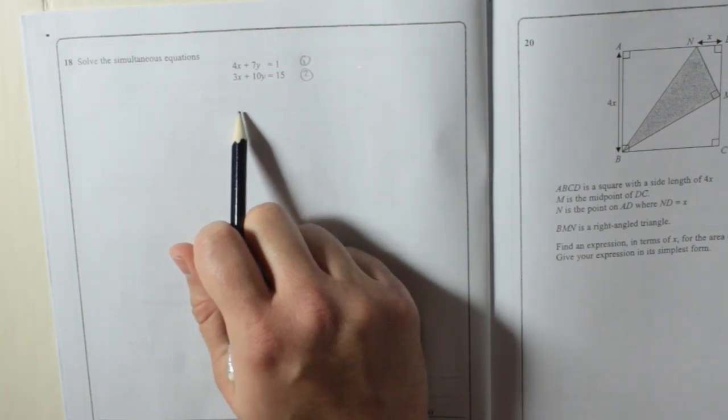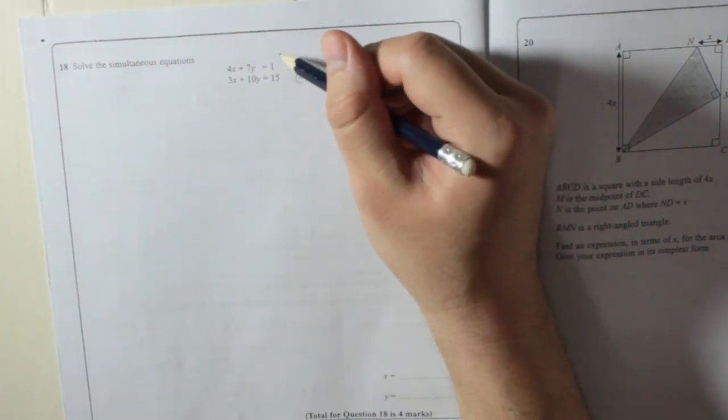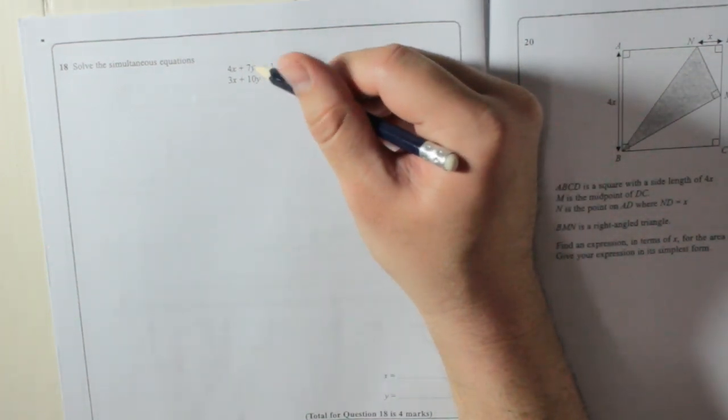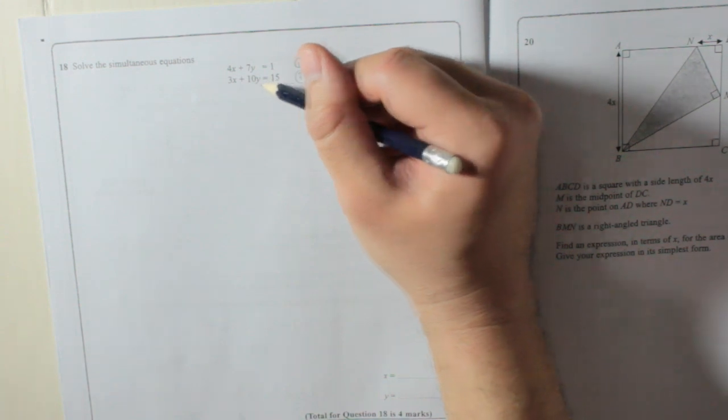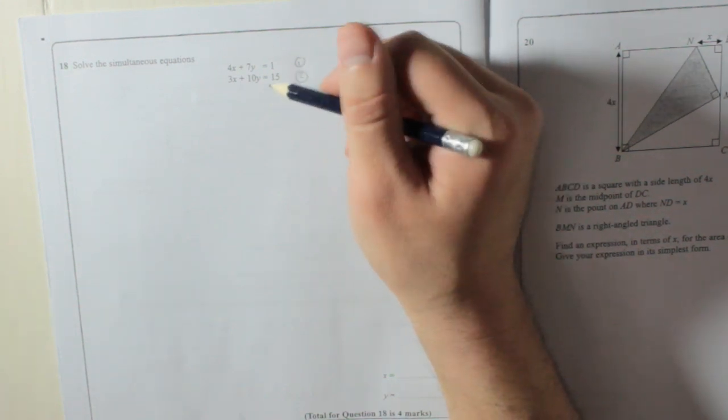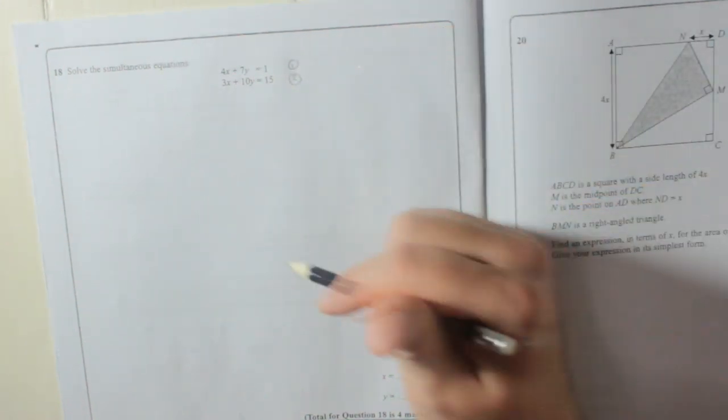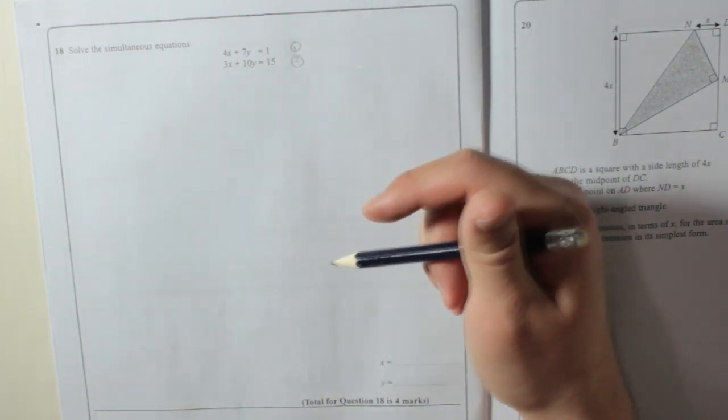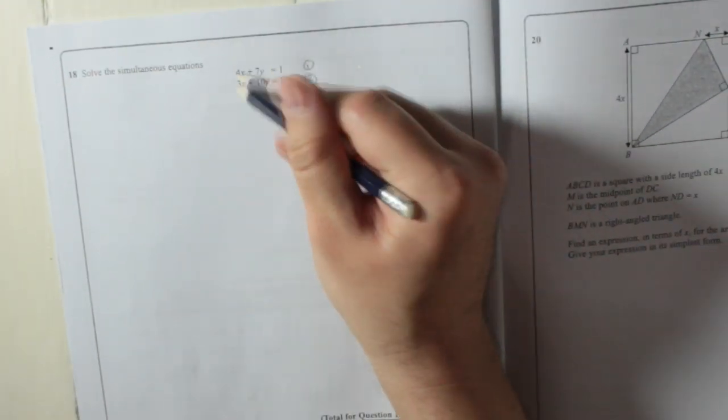Alternatively, you could match up the y's. What number do 7 and 10 both go into? Well, it's 70, so you'd have 70y's. Just because the numbers are going to be smaller, I'm going to match up the x's. I always find smaller numbers easier.